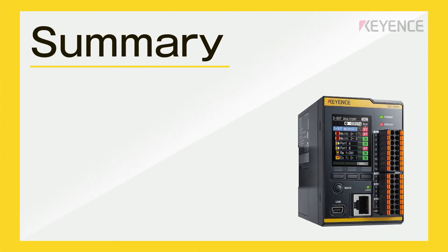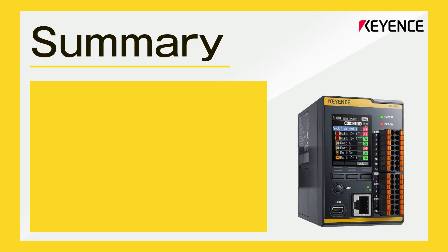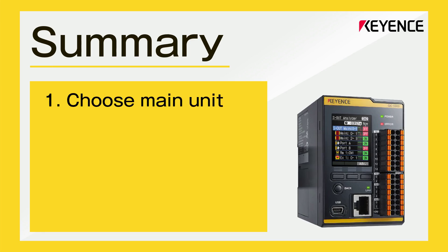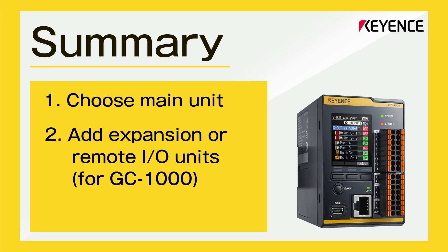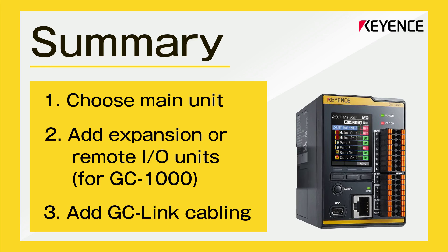This wraps up the selection process for the GC Series. To summarize: number one, choose the main controller that suits your needs most, either the GC1000 or the GC1000R. Number two, add any expansion modules or remote I/O modules your application calls for if you're using the GC1000. And number three, include up to two setups of GC Link cables to connect your Keyence safety sensors to the GC1000 or GC1000R.